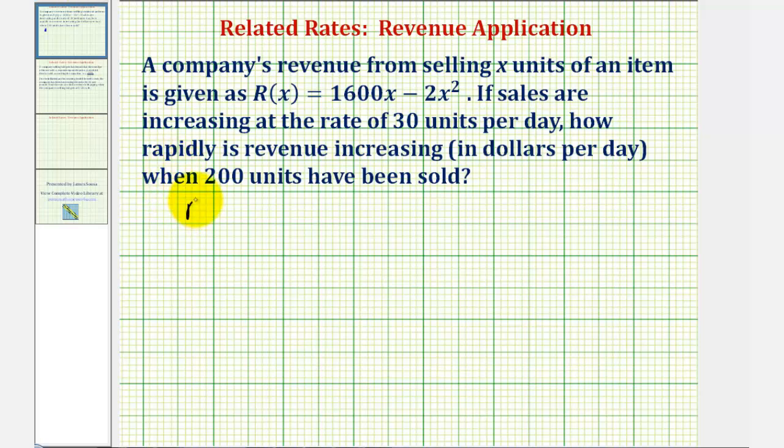We're given the revenue function R(x) = 1600x - 2x².